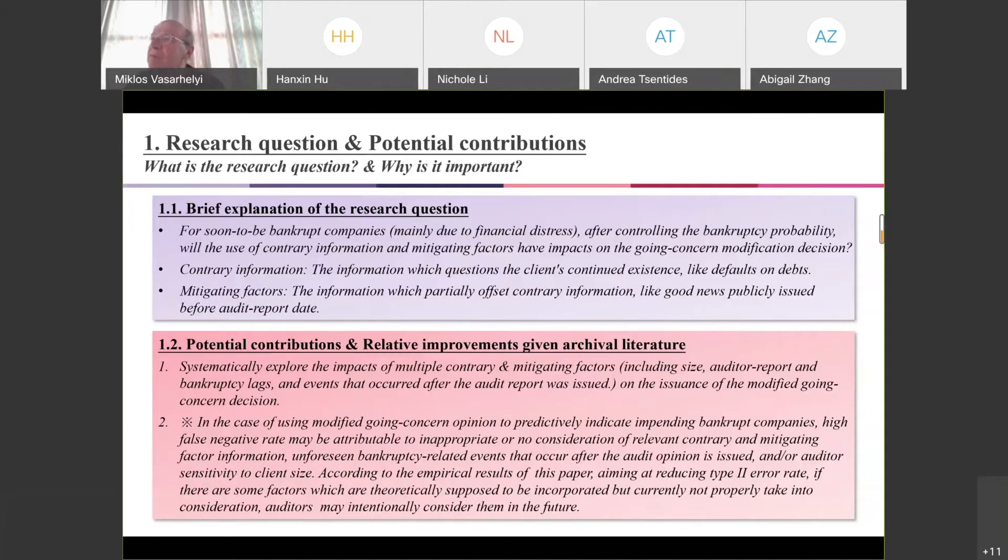After controlling the probability of bankruptcy, will the use of contrary information and mitigating factors have impacts on the going concern modification decision? As for the contrary information, it includes information which questions the client's continued existence, like default on debt, which means the corporation has some difficulties and problems in continued existence.